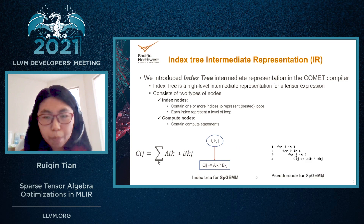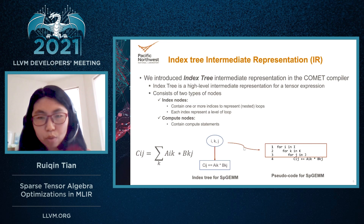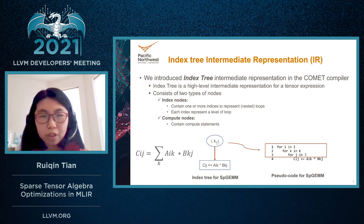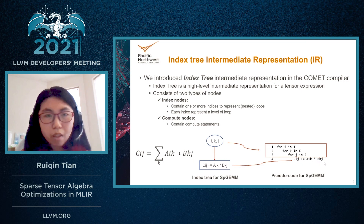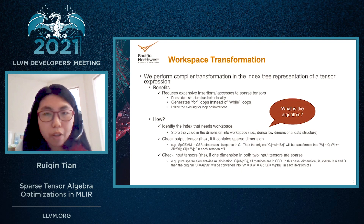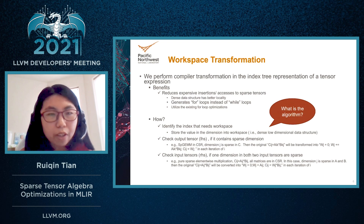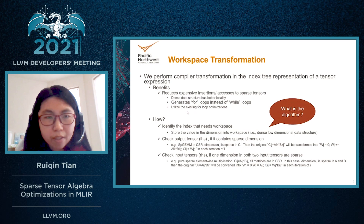This index tree represents code where the index nodes generate nested loops in the same order as the index order, and the leaf nodes generate the compute statement. Based on the initial index tree, we apply workspace transformation on the index tree representation. This reduces expensive insertions and accesses to sparse tensors, uses dense data structures for better locality, and prefers to generate for-loops instead of while-loops because for-loops can utilize existing for-loop optimizations.